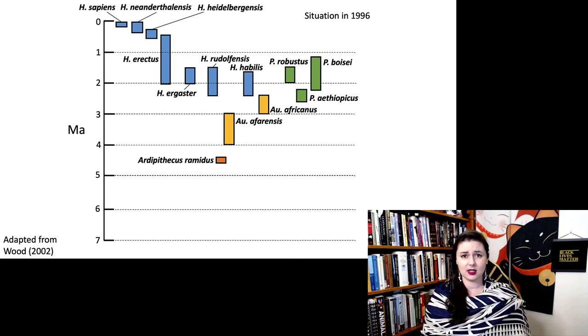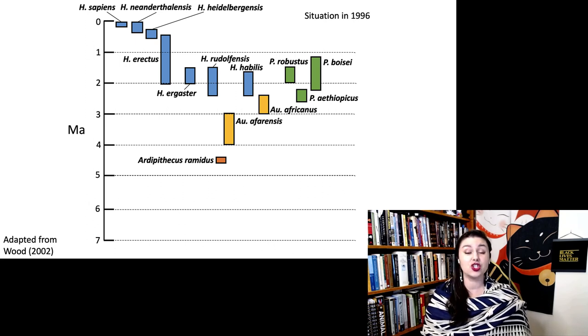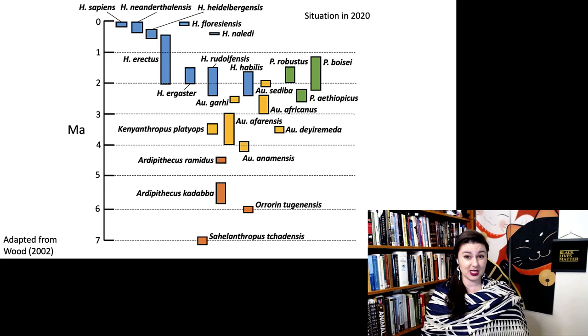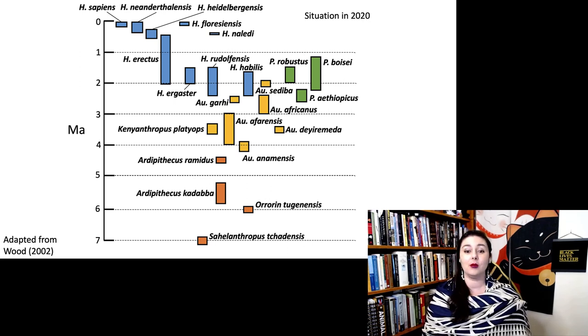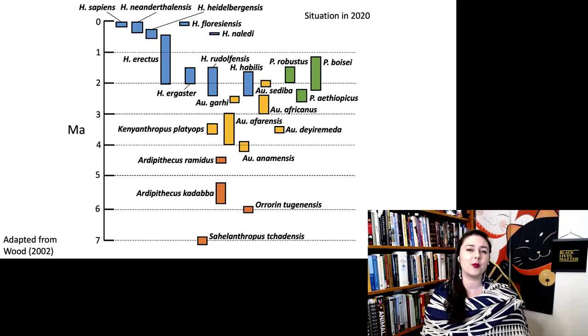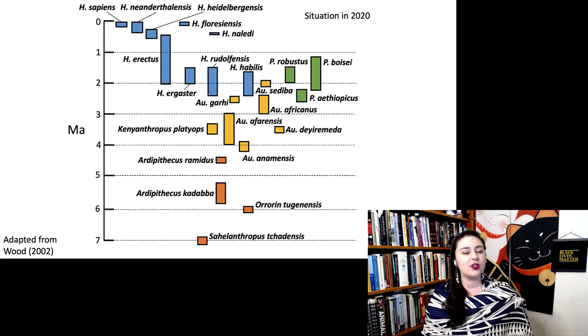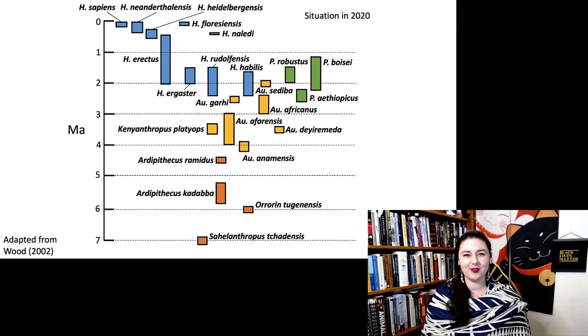So 1996 wasn't that long ago. But now we have so many more species that we have discovered that we are aware of now in 2020. So there are just so many more species going on that it is a little bit more complicated to figure out who's related to who and exactly what happened.